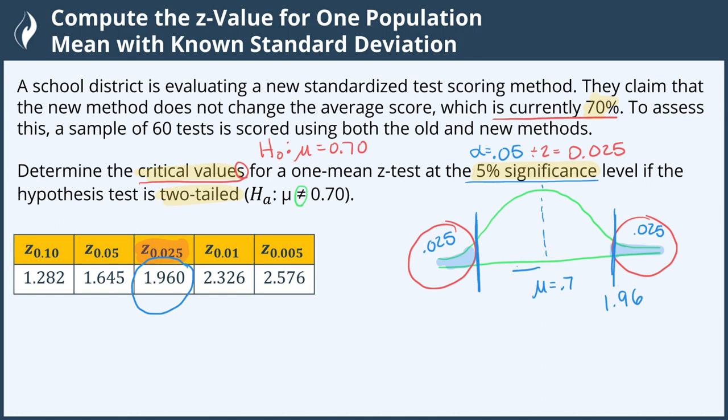Which is on the negative side of the critical values, so this is negative 1.96. And we know that these should match to be exactly perfect because the normal curve is exactly symmetric over the center.